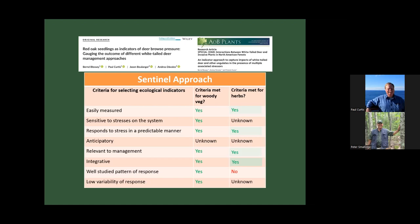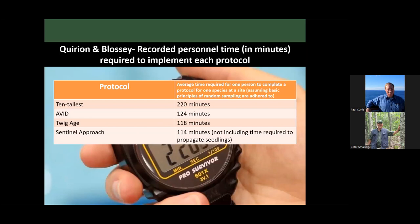Brendan also recorded the average time required for one person to complete the protocol for one species at each site. The most time-consuming process was the 10 Tallest, at on average about 220 minutes — a lot of that time involves finding plots and then determining which are the 10 tallest. AVID took on average about 124 minutes, similar to AVID, about 118 minutes. Sentinel took about 114 minutes to set up and sample plots, but that doesn't include the time required to propagate the seedlings, which would be an added time cost.